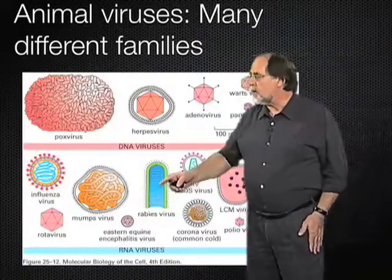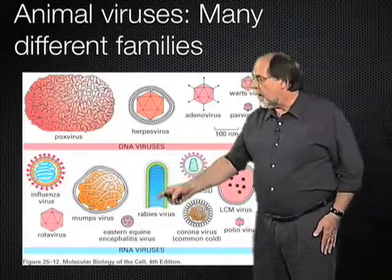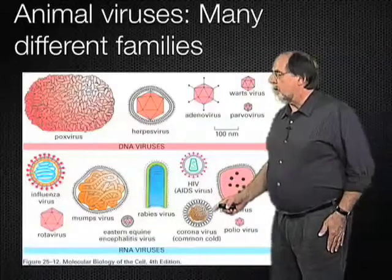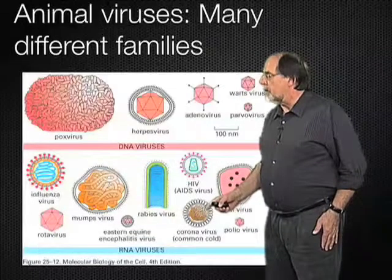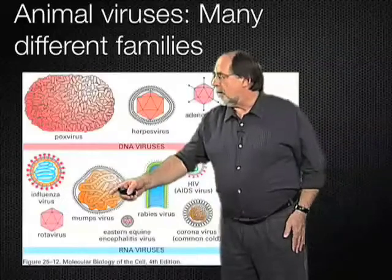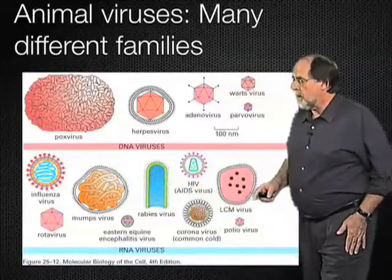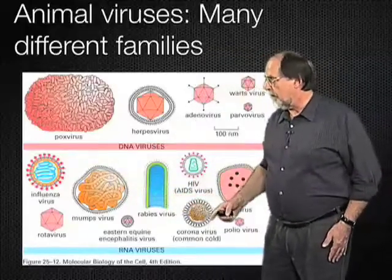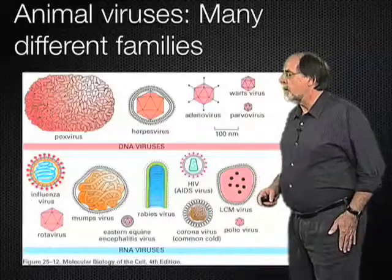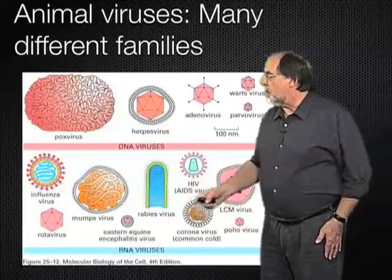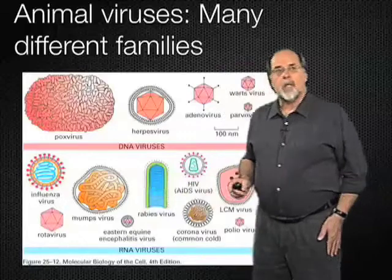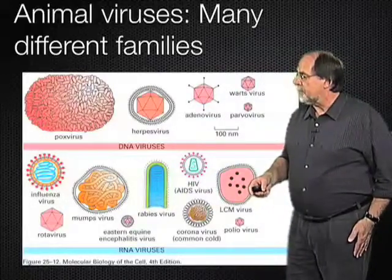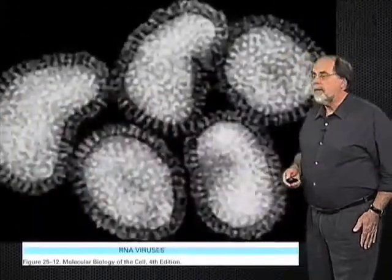Down here are so-called enveloped RNA viruses — they contain the lipid bilayer envelope. Some of them have an icosahedral capsid, others have a helical capsid. Up here is the influenza virus, down here is the SARS virus or a related virus, the so-called coronavirus. I will in a moment talk about a virus from this family called the alphavirus, which causes encephalitis.